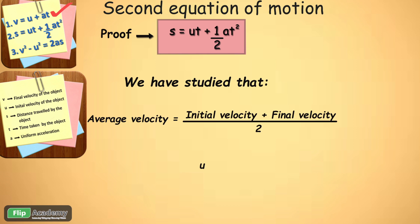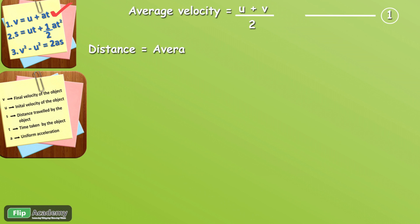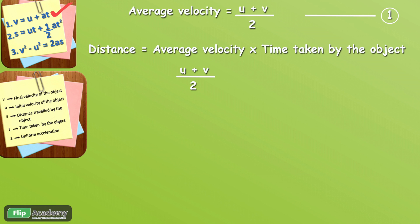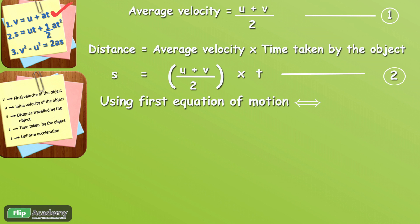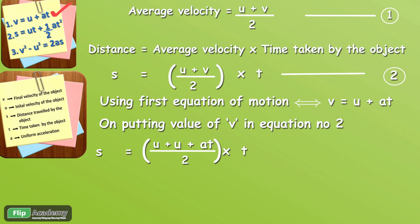The distance S is given by average velocity multiplied by time T. So we substitute the average velocity expression, giving S equals U plus V upon 2, multiplied by T. Then, using the first equation of motion — V equals U plus AT — we substitute V into this expression. Putting the value of V into the distance equation, the equation is modified accordingly.